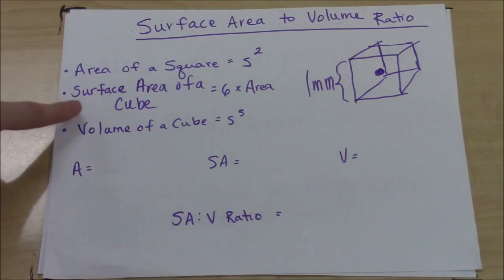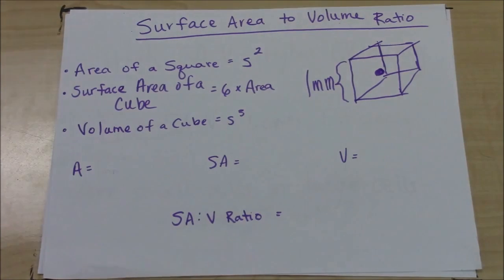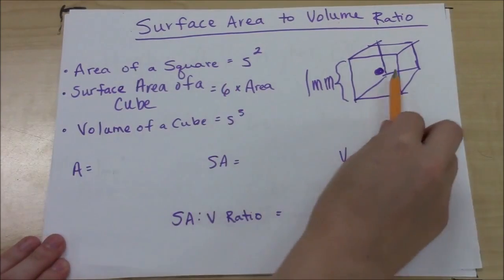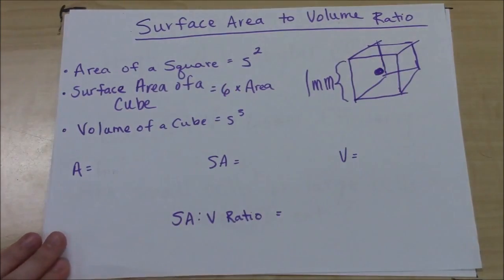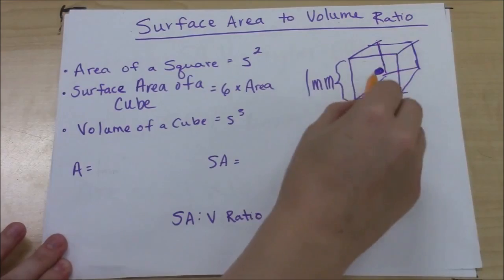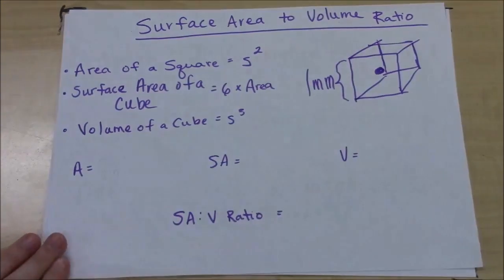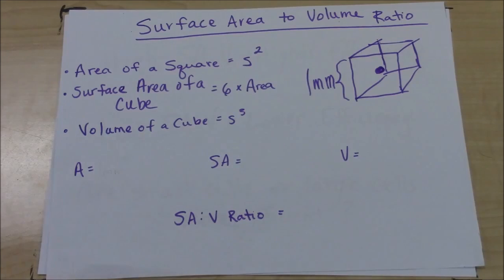Then, to determine the surface area, you do six times the area of one side, because a cube has six sides. Then to determine the volume of the cube, you just take the length of the side and cube it.